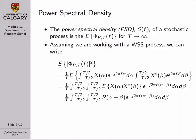The power spectral density (PSD) for a stochastic process, denoted S(f), is basically the expected value of the power spectrum of that signal as we take T to infinity. What we'll do first is come up with an expression for the expected value of the power density, work with it and try to simplify things, and then take the limit as T approaches infinity as our last step.